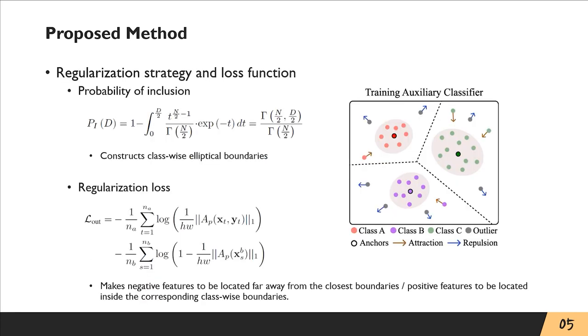In this scheme, we propose a regularization strategy that can further enhance the OoD detection performance. By using the prototypical classifiers, we formulate the probability of inclusion, which can construct classwise elliptical boundaries, which are the gray colored region in the figure.